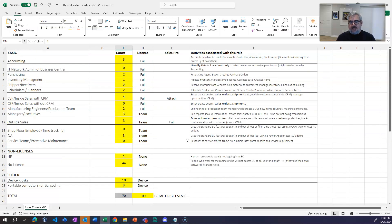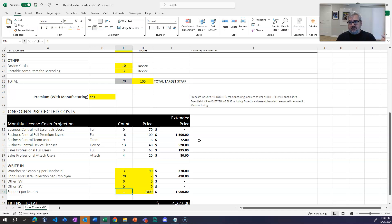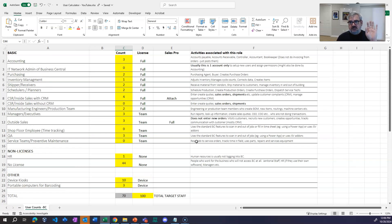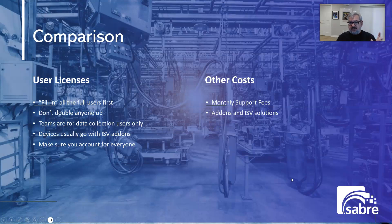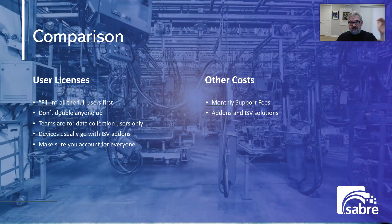That's the spreadsheet and how I fill it out. Sabre's own version has more information, but this simplified version will be shared with the YouTube video. To summarize: first fill in your total user count, then don't double anyone up — if someone in accounting also does purchasing, put them in one category only. That's another reason to track the total at the bottom. Team member licenses are really good for data collection or read-only report access; they're not ideal for major transactional work, but you can experiment with them.